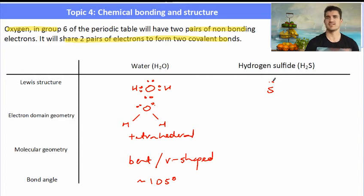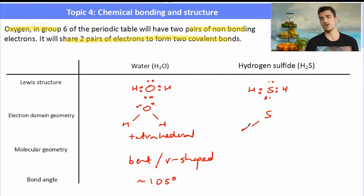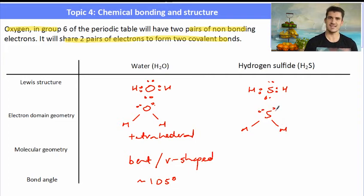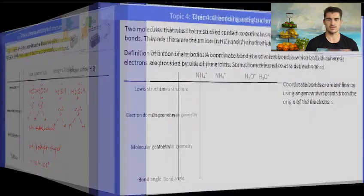Hydrogen sulfide — sulfur is in the same group as oxygen, so it will exhibit the same type of domain geometry and molecular geometry. One thing to remember about sulfur is that sometimes it can expand its octet and have more than eight electrons in its outer shell, and we come across one of those later. It will have the same electron domain geometry as water and the same molecular geometry.